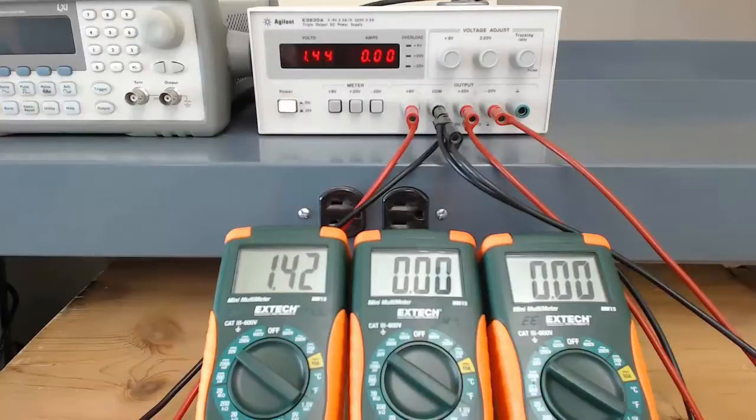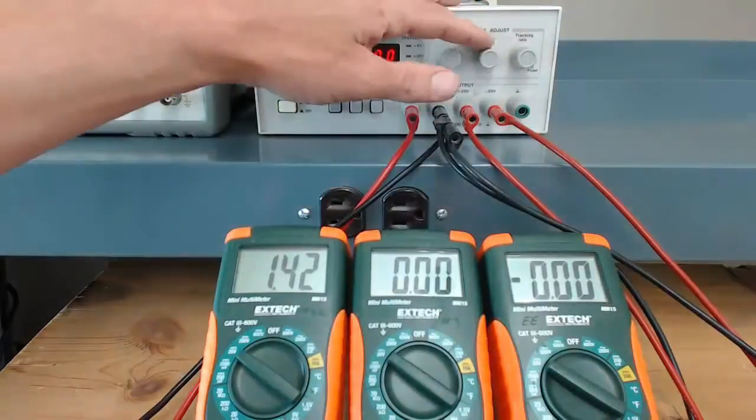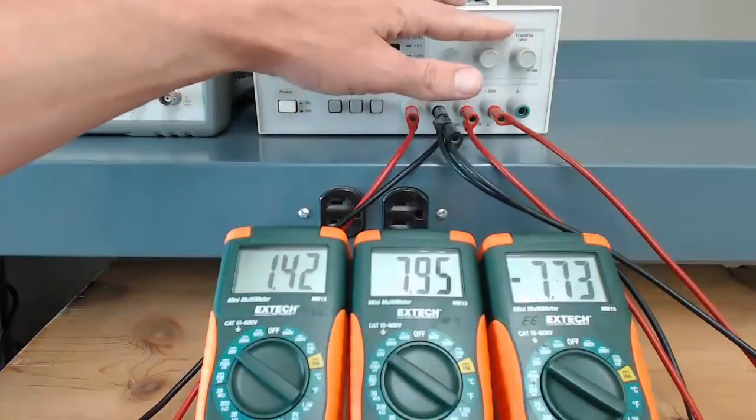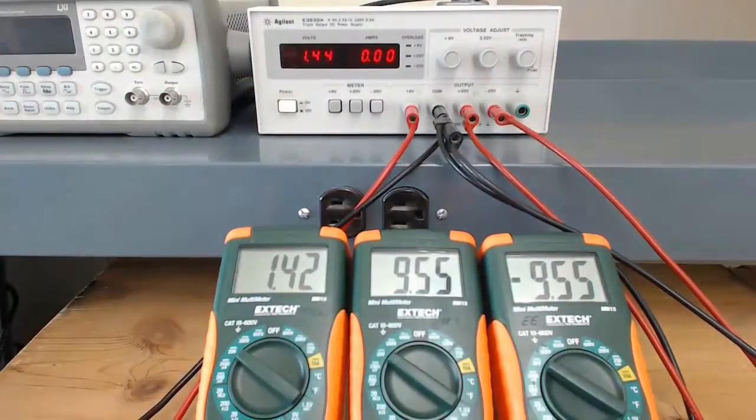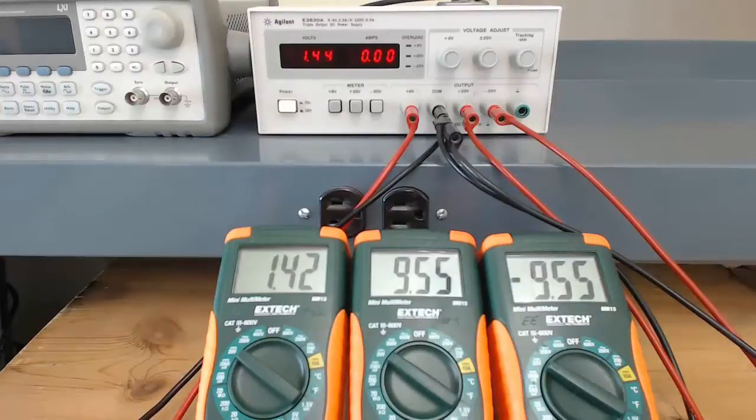If I then turn the plus or minus 20 volt knob clockwise, we see that the multimeters connected to those outputs now register an increase in voltage. And those voltages have the same magnitude with one being positive and one being negative. Note that the display on the power supply did not change because I did not move the 6 volt knob. The display and the meter buttons have no effect on the actual output of the power supply. They are just there so that we can have a quick way to see the approximate output voltage of the selected channel.